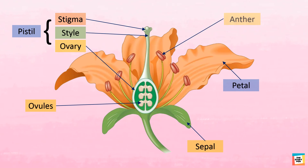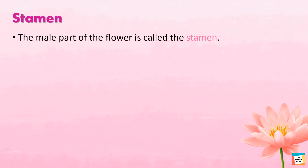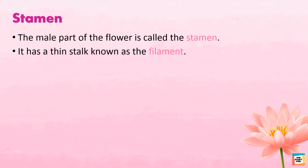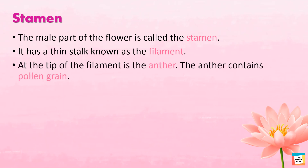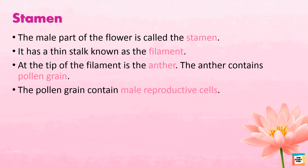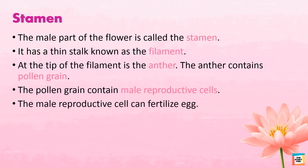Anther and filament make up the male part of the flower, known as the stamen. It has a thin stalk known as the filament. At the tip of the filament is the anther. The anther contains pollen grains, which contain male reproductive cells.